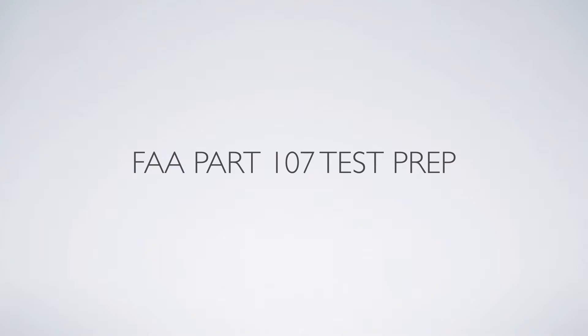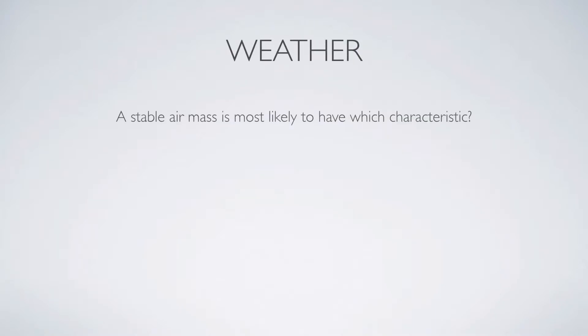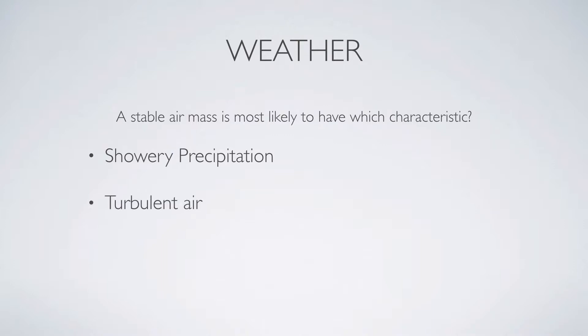I'm bringing you a weekly test prep question. This week's question is on weather. The question is: a stable air mass is most likely to have which characteristic? Showery precipitation, turbulent air, or poor surface visibility?